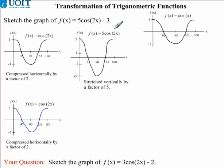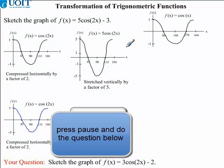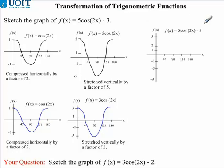Here's how our graph of 5 times cos(2x) should look. I would now like you to apply this transformation to the question that you were given. Coming back to our question, we now need to apply our last transformation — the negative 3. So we're going to draw our third and final graph: 5 times cos(2x) minus 3. The negative 3 will cause our previous graph to shift downwards by 3 units.